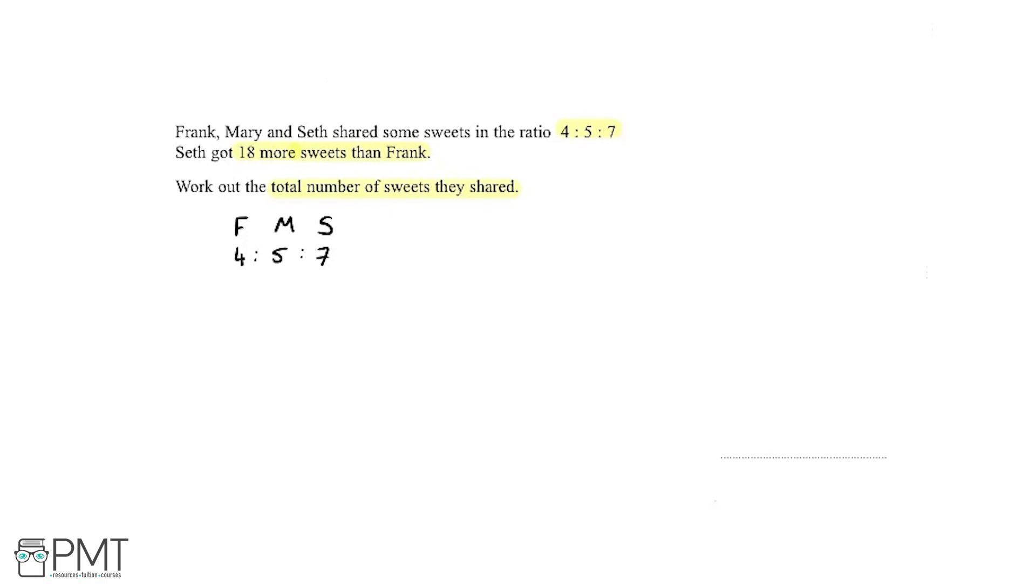Now this is the key part. Seth got 18 more sweets than Frank. If we decode the wording in the question, we're referring to the difference between Seth and Frank. When we mention difference we're talking about subtraction, so we know we're going to have to use subtraction.